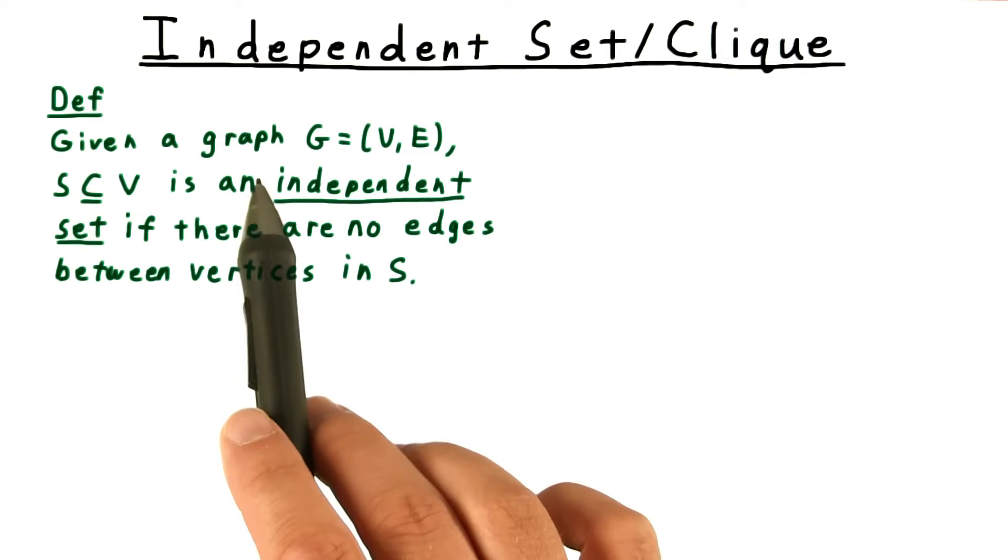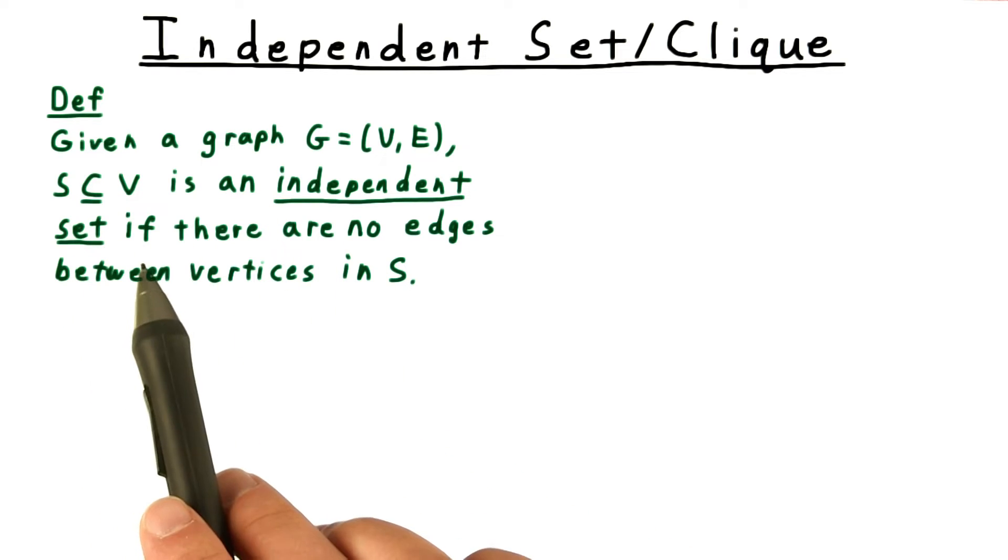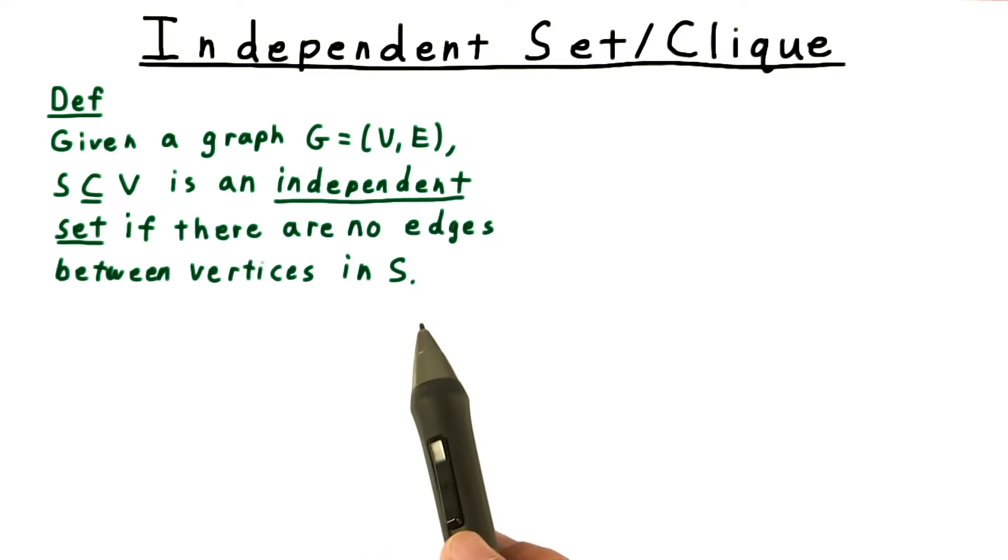Given a graph, a subset of the vertices is an independent set if there are no edges between the vertices in the set S.